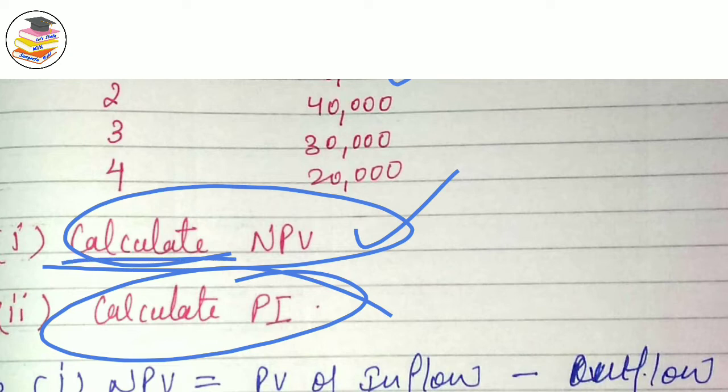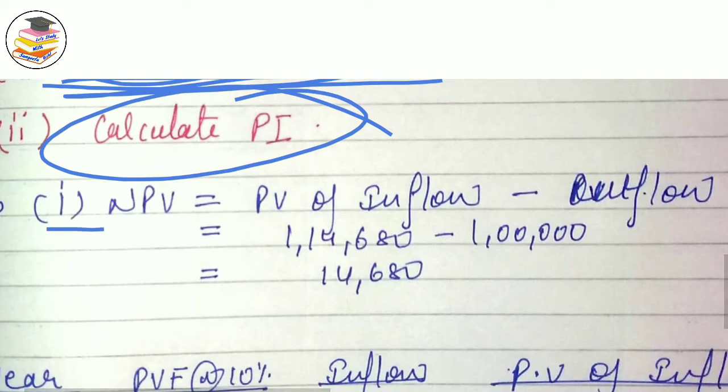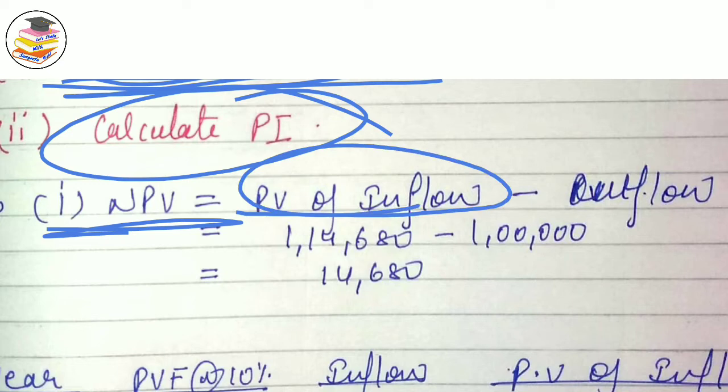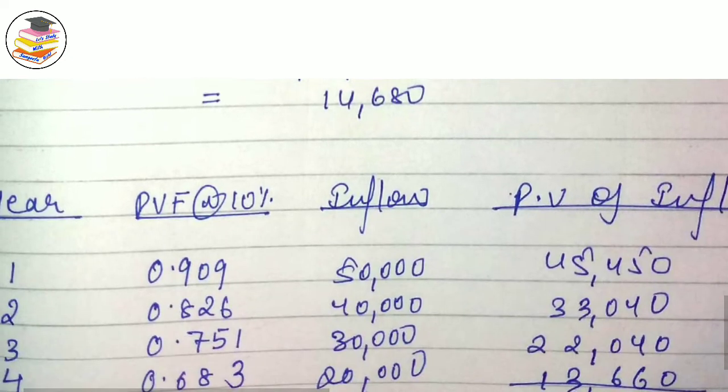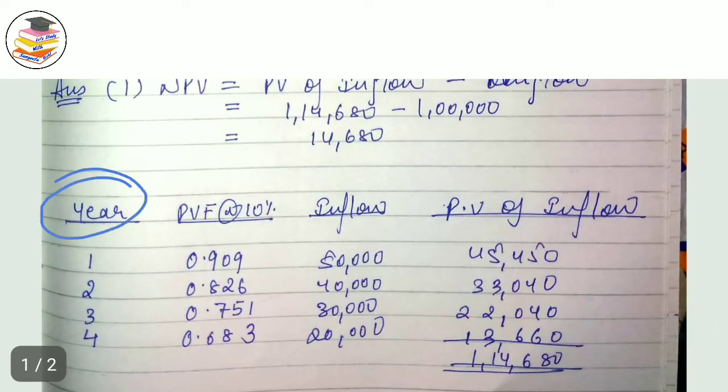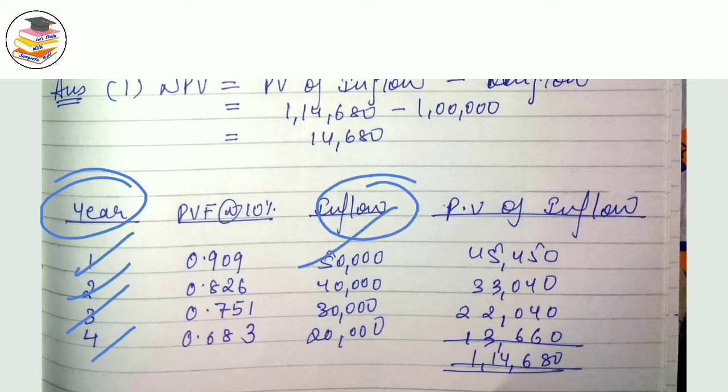Let's calculate the net present value. Net present value is present value of inflow minus present value of outflow. This is your formula. The important thing is to learn how to calculate PV of inflow. PV of inflow is calculated by multiplying the inflow amount with the present value factor.